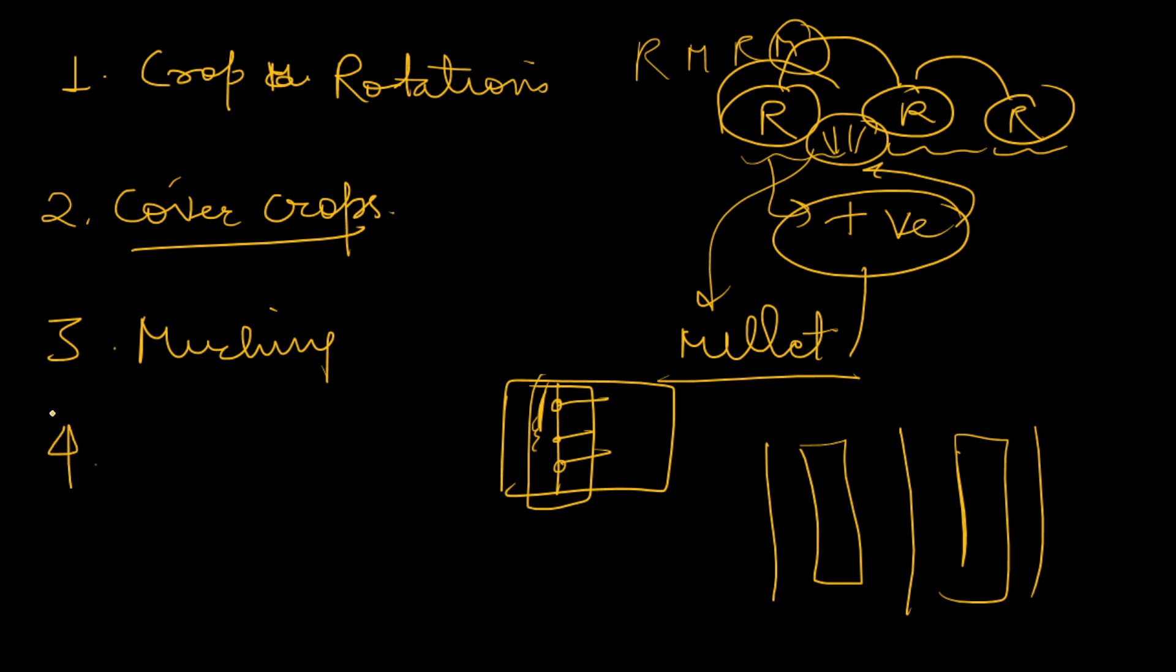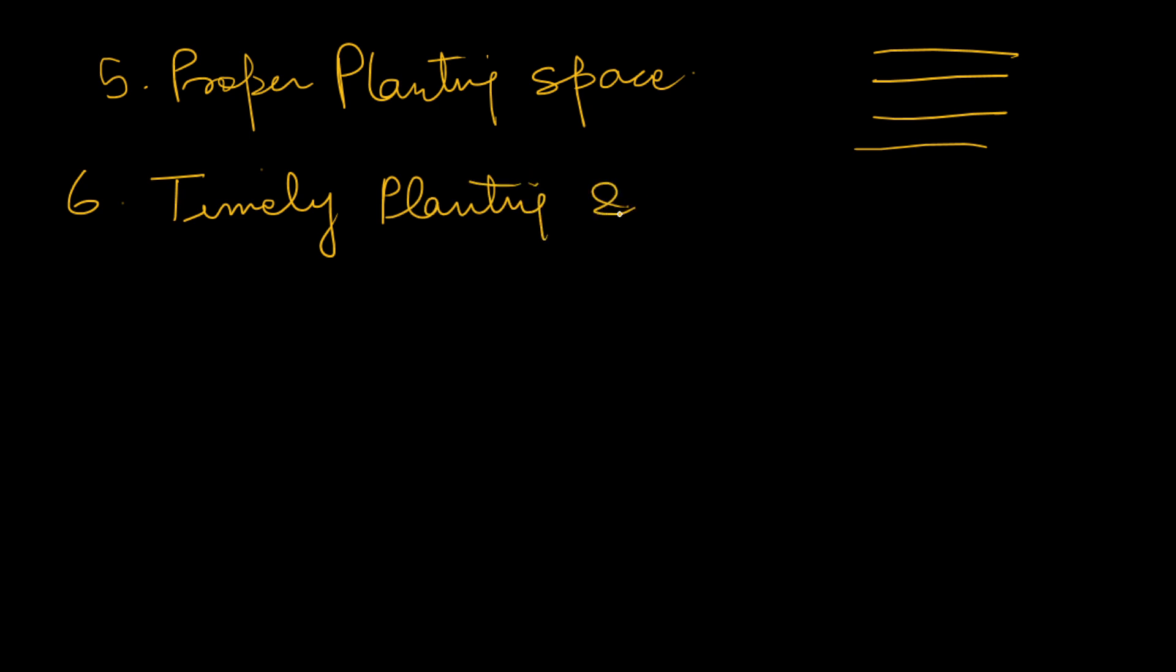We can keep proper soil health management. Maintaining soil health is very good for reducing weeds. We can keep proper planting space. Keeping proper planting space is very necessary. When there will be more space available, the weeds will get more areas to grow, but when the planting space is adequate, the areas left for weed growth will be very less. Timely planting and harvesting needs to be done.